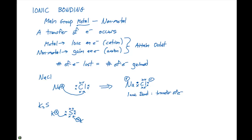This is why the formula is K₂S. When this particular ionic bond forms, we have the six electrons from sulfur and two electrons — one each from each potassium — giving us our Lewis structure. In this case, the sulfur will have a two-minus charge and the potassium has a plus-one charge.